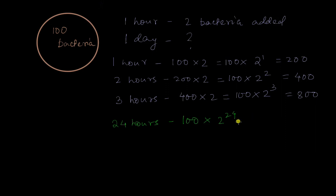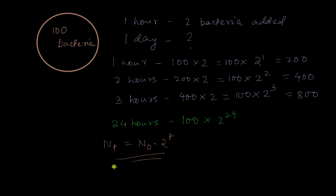We won't calculate the exact number here. Our purpose is to find a formula that generally tells you the total number of bacteria — or any cells — after a certain amount of time, given how fast they're multiplying. Calling the number of cells N, the time t, and the original number of cells N₀, we can write: N = N₀ times 2 to the power t.